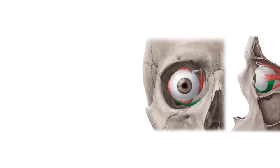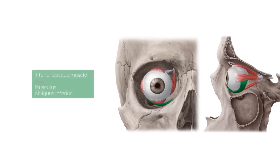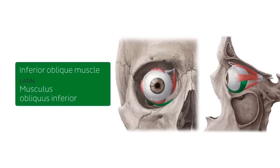The inferior oblique muscle is one of the six extraocular muscles that control movements of the eye. Of the six extraocular muscles, four are rectus muscles and two are oblique muscles. The inferior oblique is situated primarily on the inferior aspect of the eye, while the other oblique extraocular muscle, the superior oblique, lies primarily on the superior aspect of the eye.